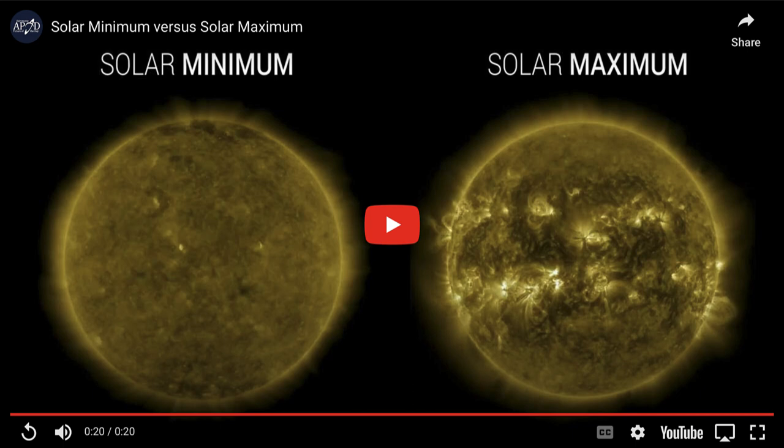The video shows the activity of the sun at solar minimum compared to solar maximum. In the still shot, on the left is solar minimum and on the right is solar maximum. Let's go ahead and play the video and watch what we see.